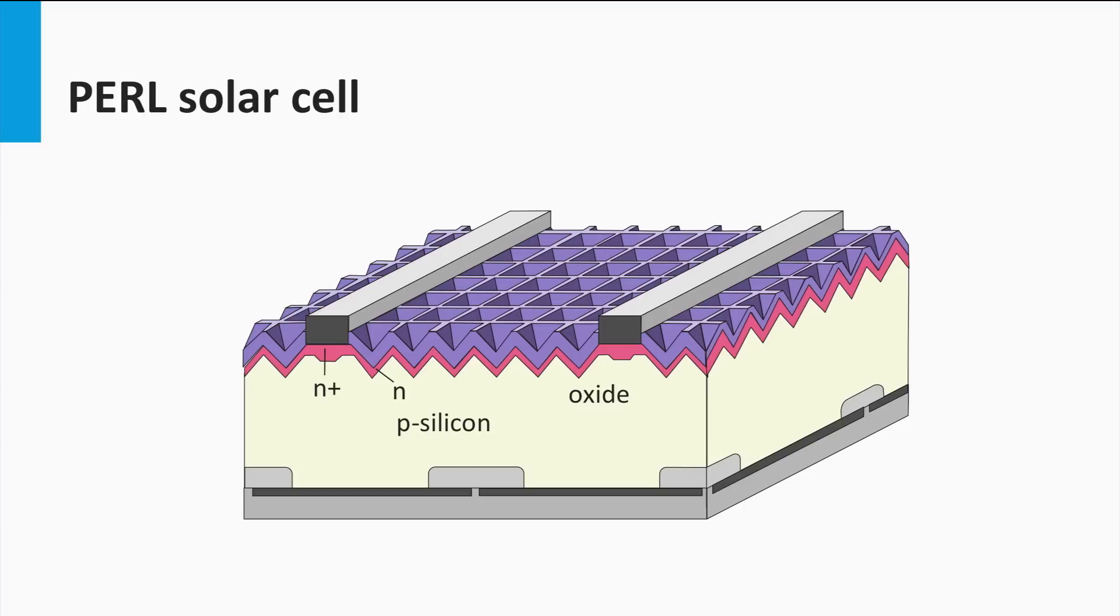The emitter is passivated with a silicon oxide layer on top to suppress the surface recombination velocity as much as possible. The surface recombination velocity has been suppressed to the level that open-circuit voltages with values above 700 mV have been obtained using the PEARL concept.